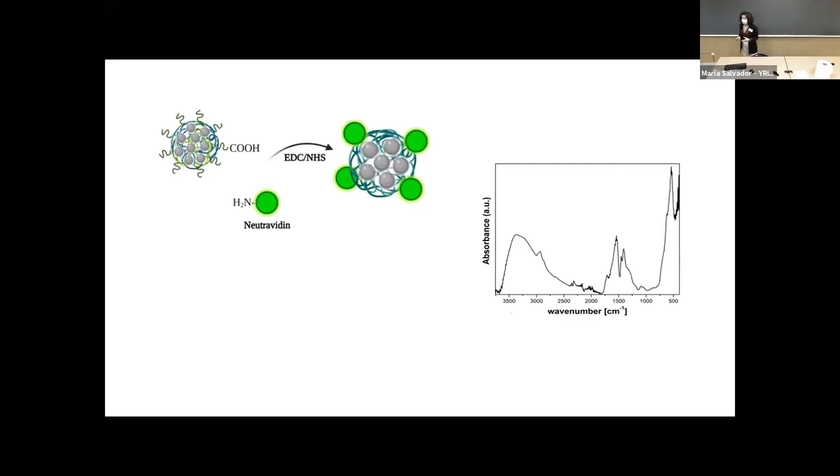But then we have to conjugate them to something that can recognize our IgG in our sample. So we are going to take advantage of the carboxylic groups at the surface. And then we are going to use EDC chemistry to attach a biorelated antibody that is able to recognize this immune response in the samples. So now our nanolabel is ready to be used in our test.